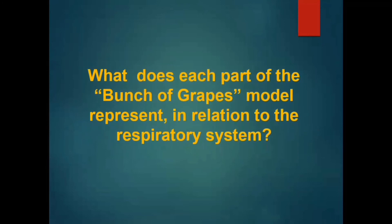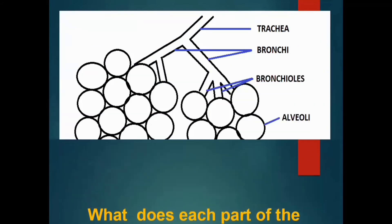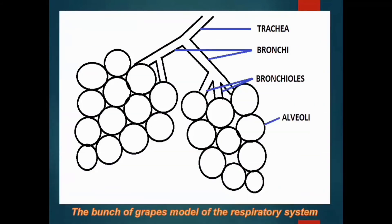Now, let us use the bunch-of-grapes model to represent the respiratory system. Trachea is the main stem. Bronchi are the large branching stems. Bronchules are the little stems. Alveoli are the individual grapes.